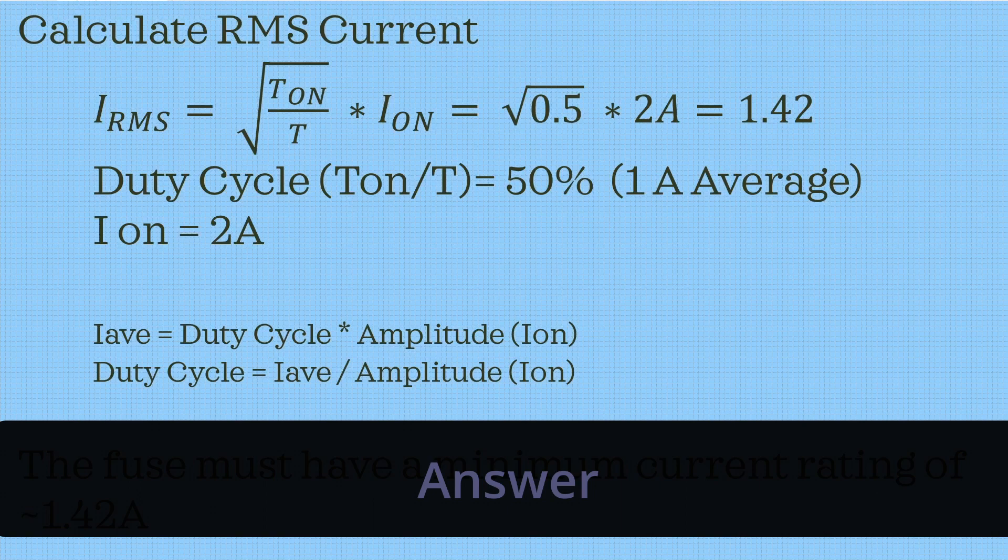The RMS current is equal to the square root of the duty cycle multiplied by the on current, which is given as 2A in the question. So in order to calculate the duty cycle, we can use the following equations.